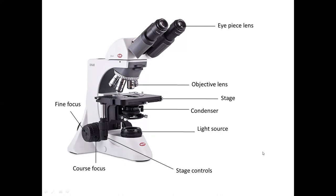Now, let's revise the parts of the microscope. Here you have the eyepiece. This is a binocular microscope, so there are two eyepieces where you place both eyes and focus. That is attached to the base and stand of the microscope. Underneath the eyepiece lenses, you get what is called the nosepiece.